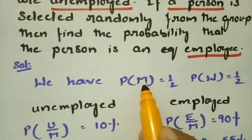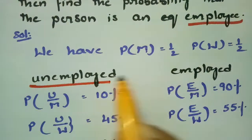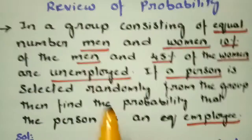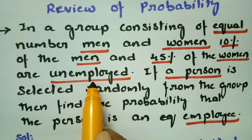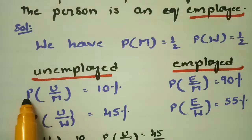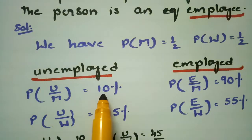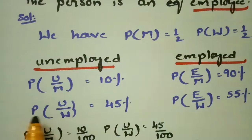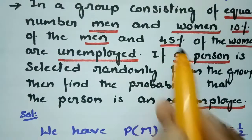We have the probability of men is half and the probability of women is half. Let U denote unemployment. The probability that men are unemployed is 10%, and the probability that women are unemployed is 45%. These values are taken directly from the question.